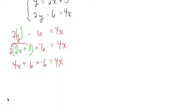And here I notice that I can continue simplifying. I can add 6 with negative 6. And 6 plus negative 6 is 0. So this is 4x plus 0 equals 4x. And 4x plus 0 is just 4x. So I get 4x equals 4x.